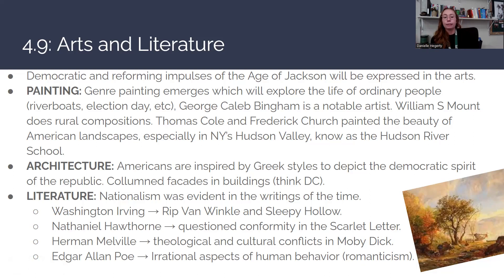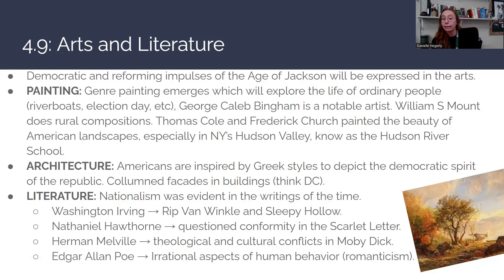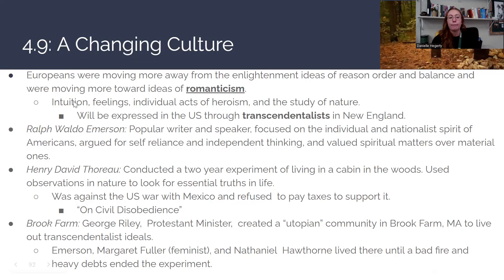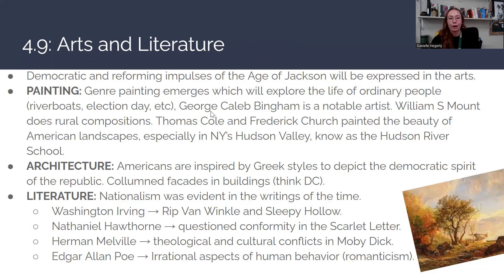For literature, nationalism is pretty evident in the writing of the time. Washington Irving wrote Rip Van Winkle and The Legend of Sleepy Hollow with the Headless Horseman. Nathaniel Hawthorne questions the conformity of U.S. culture in The Scarlet Letter, particularly that of Puritans. Herman Melville talks about theological and cultural conflicts through Moby Dick. Edgar Allan Poe points out the irrational aspects of human behavior in his short stories. Many of these works tie back to romanticism — intuition, feelings, individual acts of heroism or peril, and the study of nature.